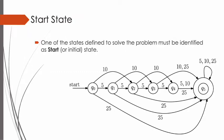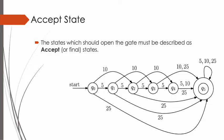Fourth, we have to define where the system will start. One of the states defined to solve the problem must be identified as the start state, or in other words, the initial state. Fifth, we need to define where the system will stop. The states which should open the gate must be described as the accept state, or in other words, the final state.